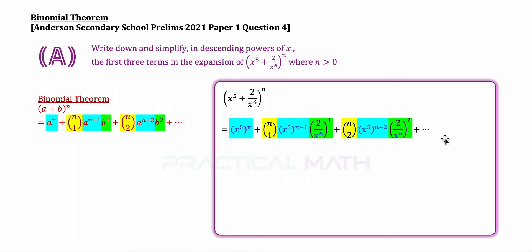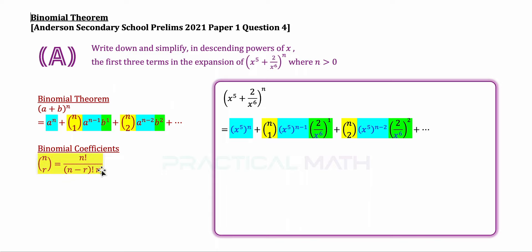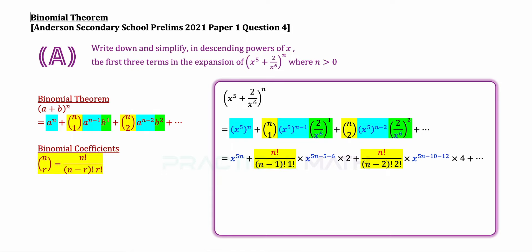We cannot expand further yet because of the binomial coefficients nc1 and nc2. The formula is: nCr equals n factorial divided by (n minus r) factorial times r factorial. So nc1 is n factorial divided by (n minus 1) factorial times 1 factorial, and nc2 is n factorial divided by (n minus 2) factorial times 2 factorial.